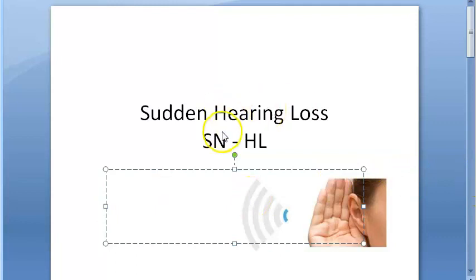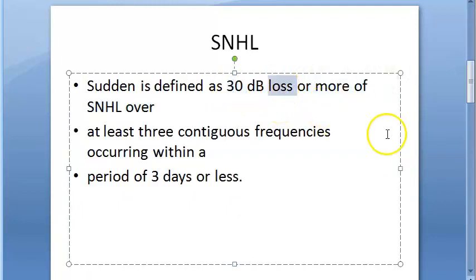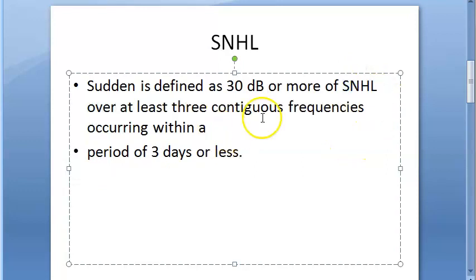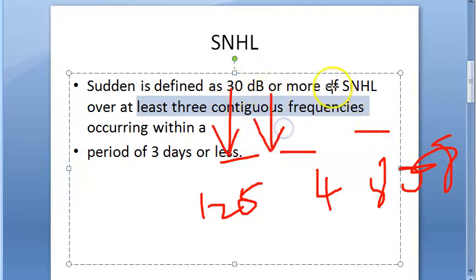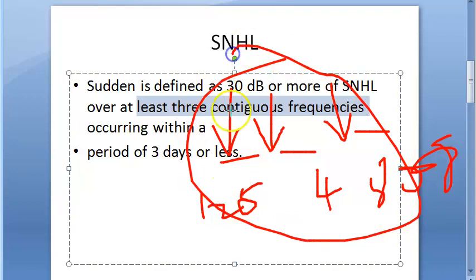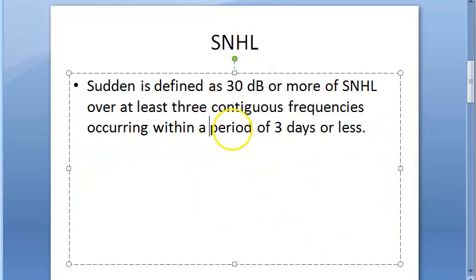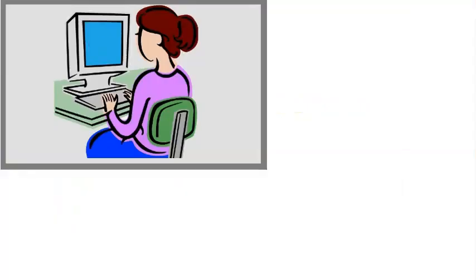Sudden hearing loss is defined as a drop of 30 decibels or more over three continuous frequencies within a period of three days or less. In audiometry, frequencies are checked from 125 Hz up to 8000 Hz. So if there is a loss of greater than or equal to 30 decibels across three continuous frequencies within three days, that qualifies as sudden hearing loss.